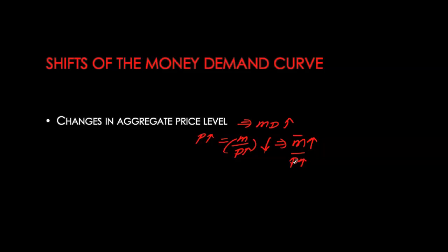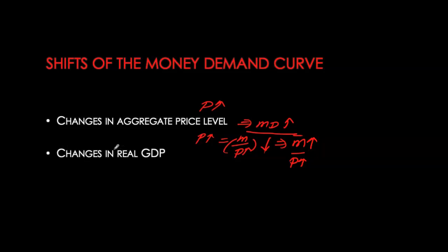For example, if you spend $100 every week on groceries and prices overall have gone up, you now need to hold more cash to buy the same basket of goods per week. So we see a proportional increase in money demand whenever there's an increase in the price level.